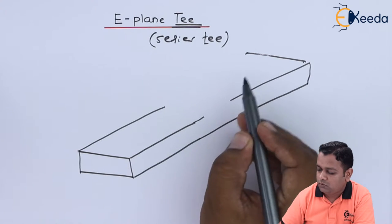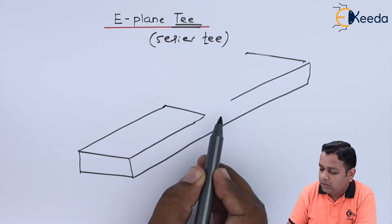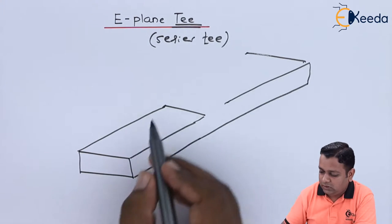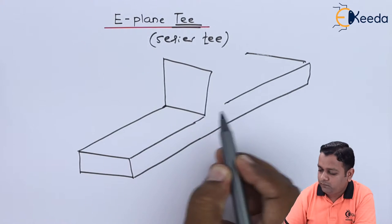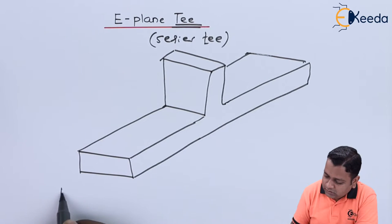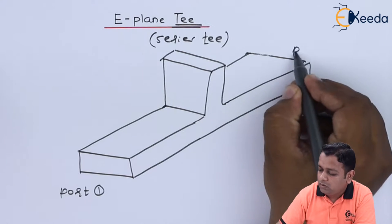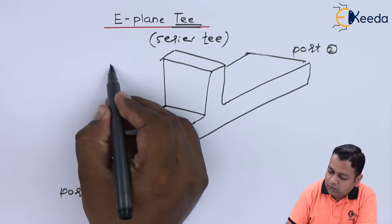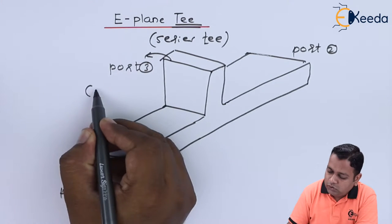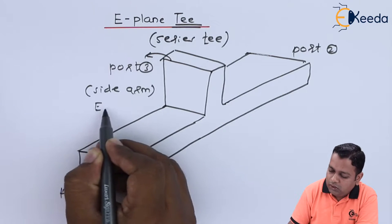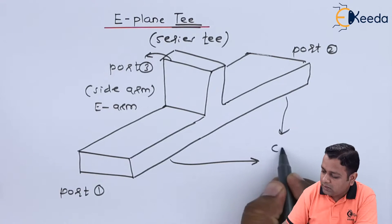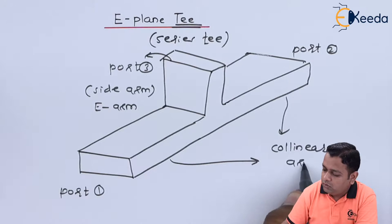Port number one and port number two extend along the main arm. In between, there is a junction connected to the broader dimension of the rectangular cross-section. This junction arm is port number three, which can also be called the side arm or capital E arm. Port number one and port number two are called the collinear arms.